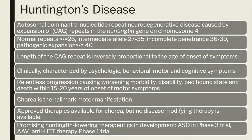When the repeat number is between 36 and 39, there is incomplete penetrance, meaning it is not necessary that every individual who carries the CAG expansion between 36 and 39 will develop a disease in their lifetime — some will and some won't. Usually it is a late onset disease. However, repeats beyond 40 are considered to be pathogenic, meaning that almost all individuals who have repeats beyond 40 will manifest symptoms and signs of Huntington disease in their lifetime. The length of the CAG repeat is inversely proportional to the age of onset of all symptoms, and especially motor symptoms.